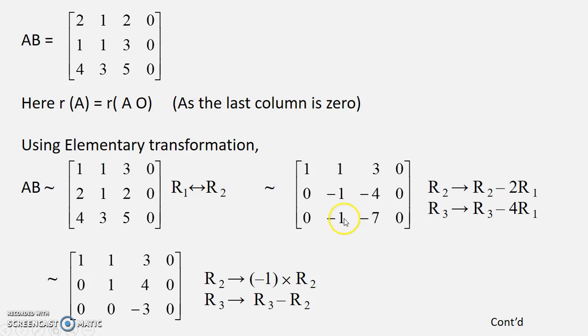So you will get this matrix where you have 0 coming below 1 which is a leading element of 1. Now again we need 1 here so we can multiply this by minus 1. So that is what we have done here. Now we need 0 here. So you can subtract because sign is same.